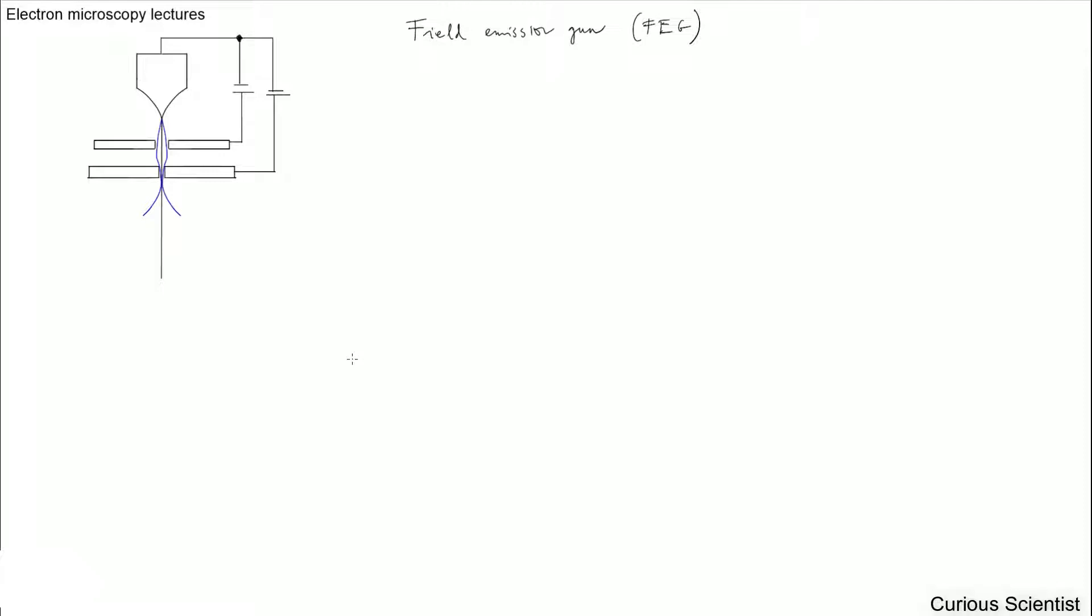So I already have my drawing here, so I will just complete it. So basically this part is the field emission tip. And then there are two anodes. So this is the first anode, and these plates are the second anode. And each of them have different voltages. So let's call them V1 and V2.